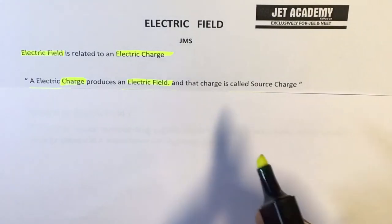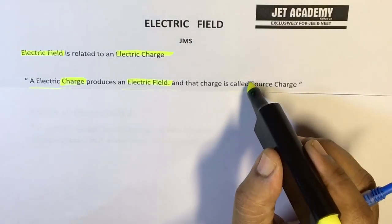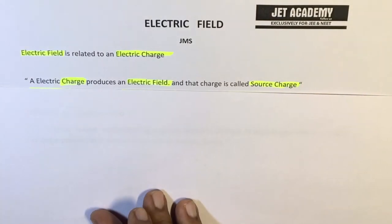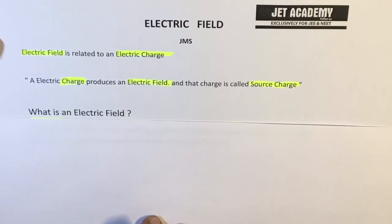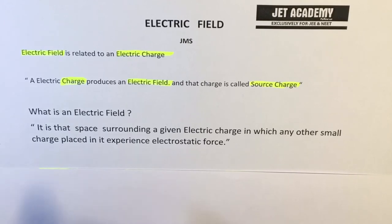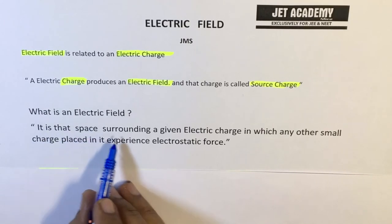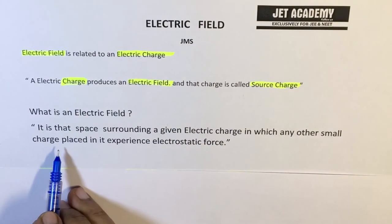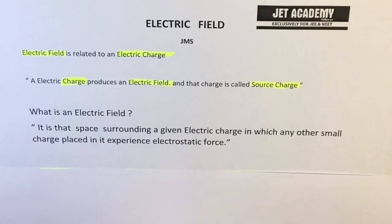And that charge we call it as source charge. A source charge is the one which we consider as producing the electric field. So what is an electric field? It is that space surrounding an electric charge in which any other small charge placed in it experiences electrostatic force. This is the very simplest definition which we are going to understand in detail.